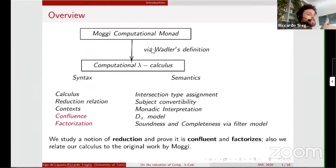but there is a whole branch about semantics. We studied intersection type assignment system, proving subject convertibility, for example, and we provided two models in the inverse limit model relating them. What we will talk about today is computational lambda calculus. The aim is to prove confluence and factorization in this calculus.